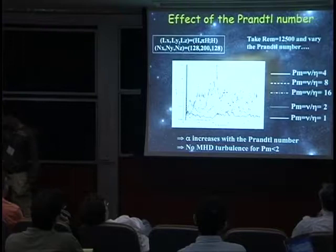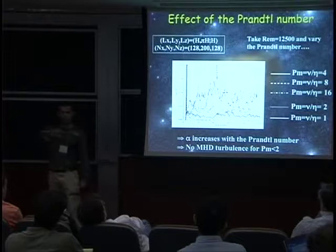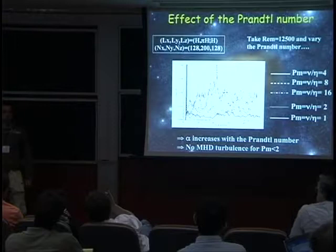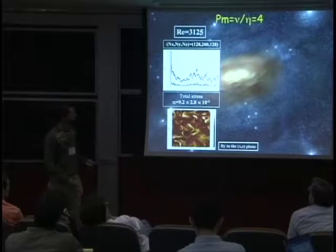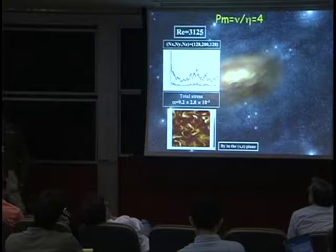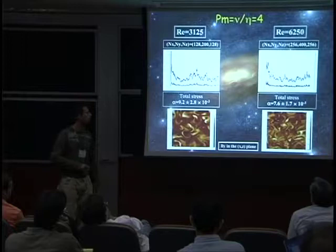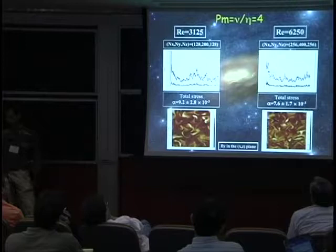You can also fix the Prandtl number and decrease the dissipation coefficients in the same ratio each time to see whether alpha converges when you increase the Reynolds number. The aim would be to go to extremely large Reynolds numbers to see whether alpha converges toward a given value. This is the same run as before, and if you double the Reynolds number using 256 grid points per scale height, you get an alpha value which is a bit smaller, about 7.5×10^-3.